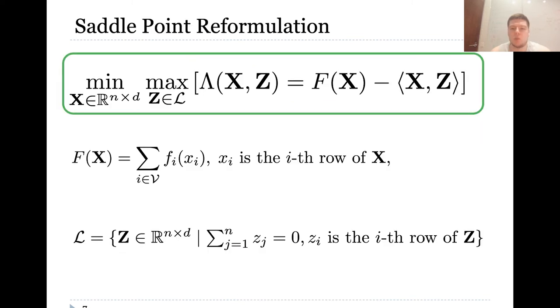Our original minimization problem has the following saddle point reformulation. F of X is a block separable function which is also L-smooth and mu strongly convex. L is a dual feasible space. We are going to solve this saddle point problem by alternating primal minimization and dual maximization steps.